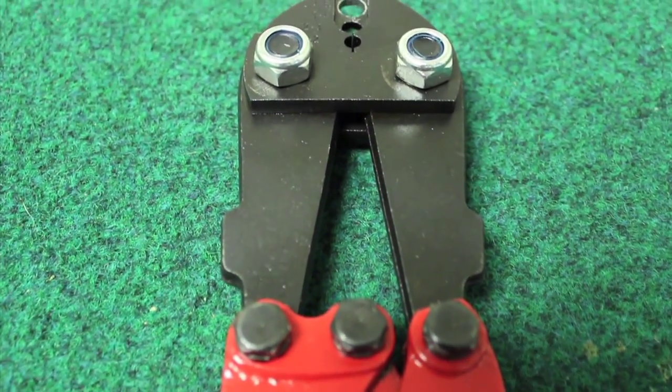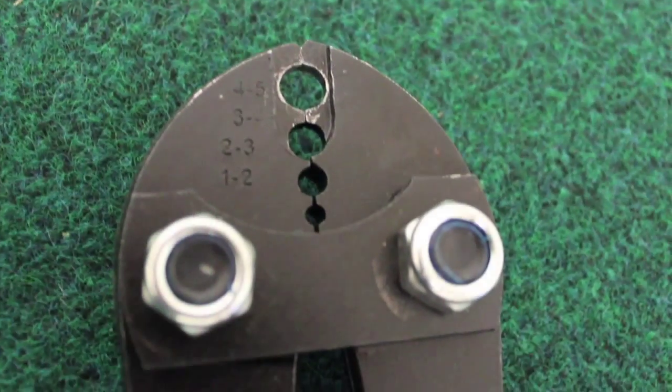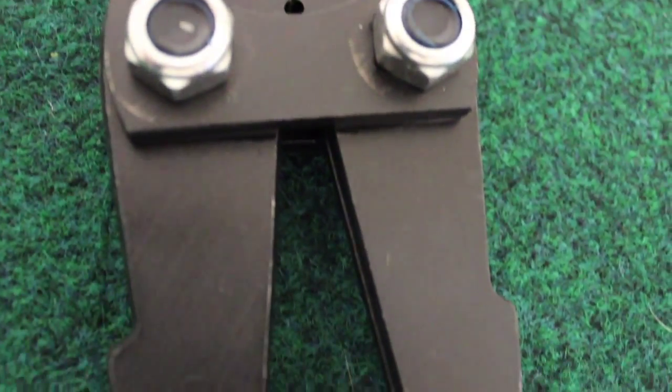The crimping tool has four slots available for connection sleeves. The correct slot varies with the different sizes of connection sleeves that you may be using.